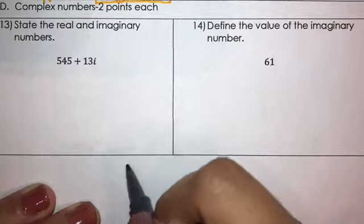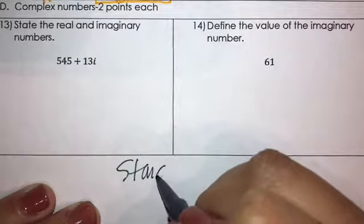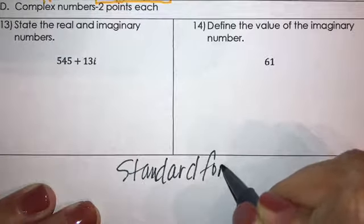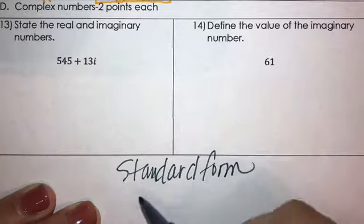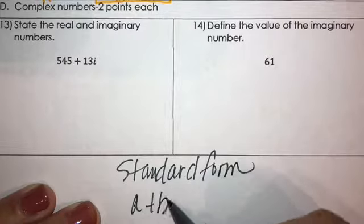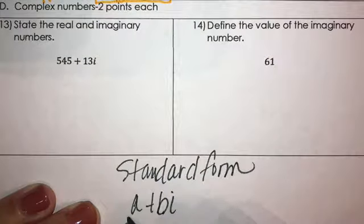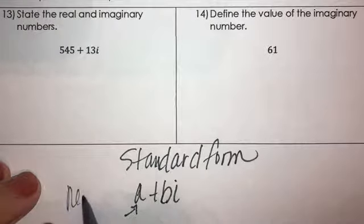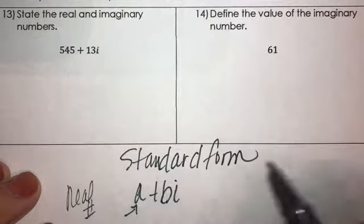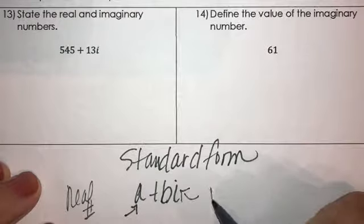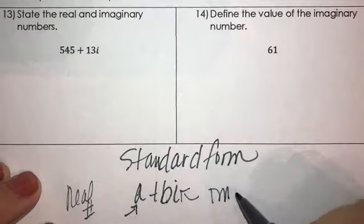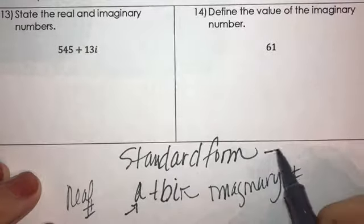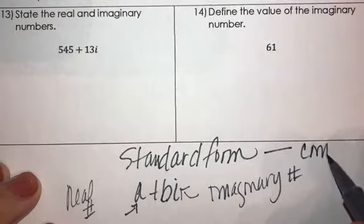So what you want here is standard form. Standard form means it's A plus B i. So this is going to be the real number, and this will be the imaginary number. And this is the standard form of a complex number.